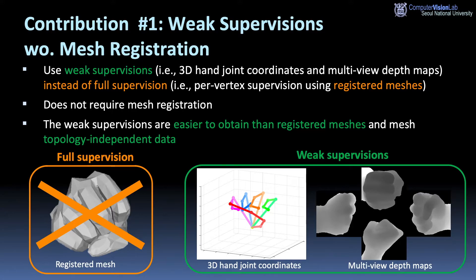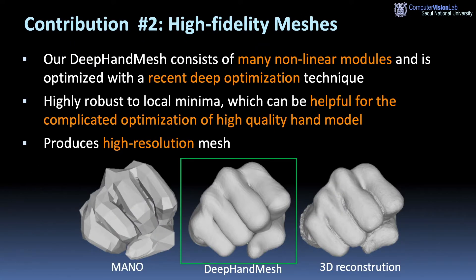Therefore, deep-hand mesh does not require mesh registration. The weak supervisions are easier to obtain than registered meshes and are mesh topology-independent data. Our deep-hand mesh consists of many nonlinear modules and is optimized with recent deep optimization techniques. It is highly robust to local optima, which can be helpful for the complicated optimization of a high-quality hand model.